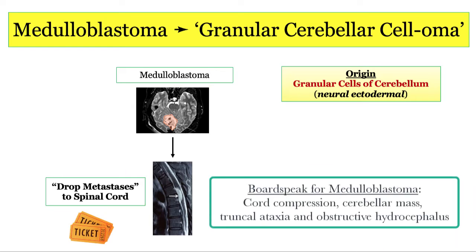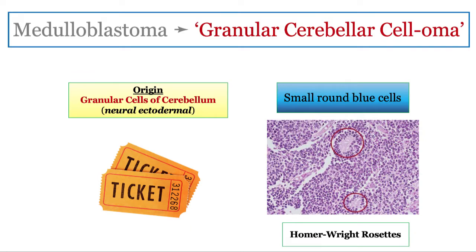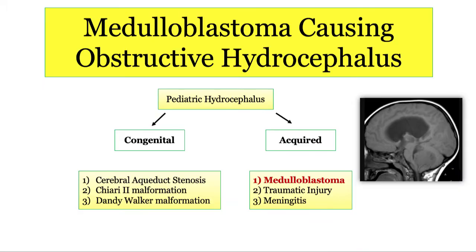Don't be thrown off if you see symptoms of spinal cord compression in a child with a cerebellar mass causing truncal ataxia and obstructive hydrocephalus — it's the NBME's way of telling you this granular celloma has metastasized to the spinal cord. You could also see a biopsy showing Homer Wright rosettes of small round blue cells wrapped around pink neuritic processes. The question may ask about the origin: granular cells of the cerebellum deriving from neural ectoderm. Let's also add medulloblastoma to the list of acquired causes of pediatric hydrocephalus alongside aqueduct stenosis, Chiari II, and Dandy-Walker malformations.